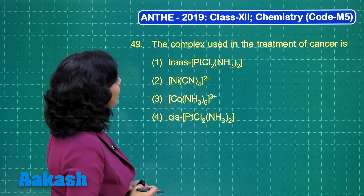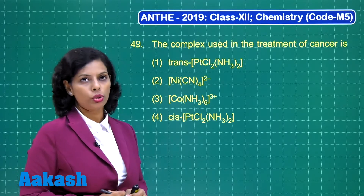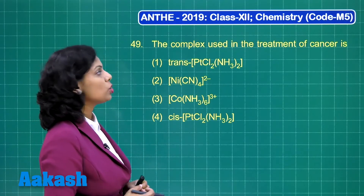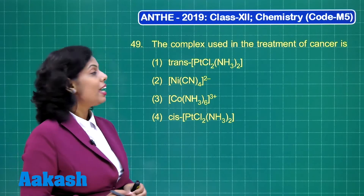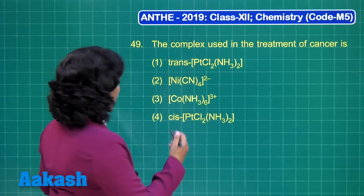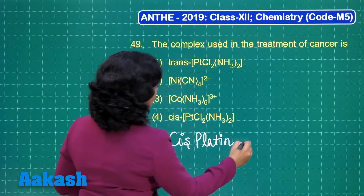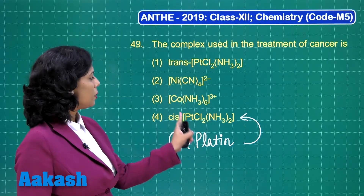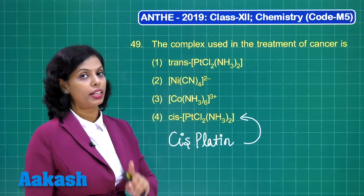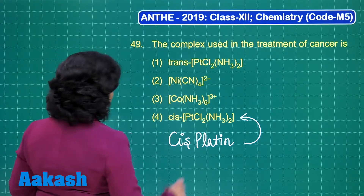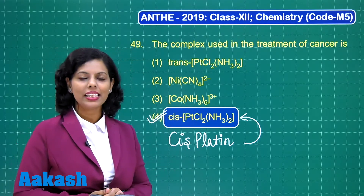Question number 49: the complex used in the treatment of cancer. Coordination chemistry has a very important role in medicines. The complex of platinum used for cancer treatment is cisplatin, with the formula cis-[PtCl₂(NH₃)₂]. This is the cis form, not transplatin, so the correct answer is option four.